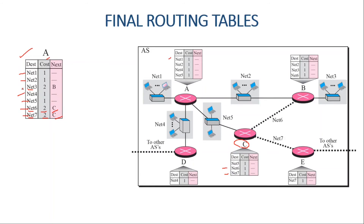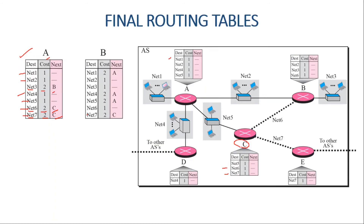Network three was added from router B's routing table — the cost was incremented to two and the next hop was set as B. For router B's final routing table, networks one, four, and five were added from router A's table, while networks two, three, and six already existed initially. Network seven was added from router C's routing table with cost incremented by one and next hop set as C.